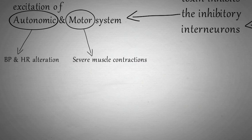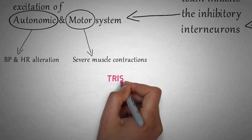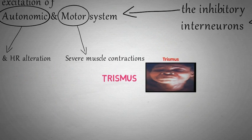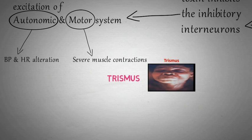These muscle contractions are known by different names according to the muscles they affect. When the muscle contractions occur in the muscles of mastication, it is called trismus. It is also known as lockjaw, as the patient is unable to open his or her mouth.